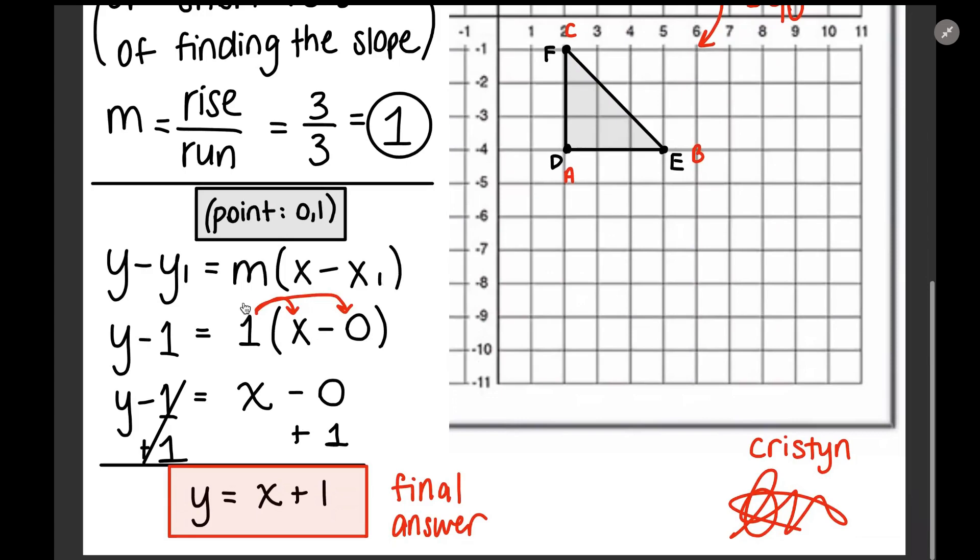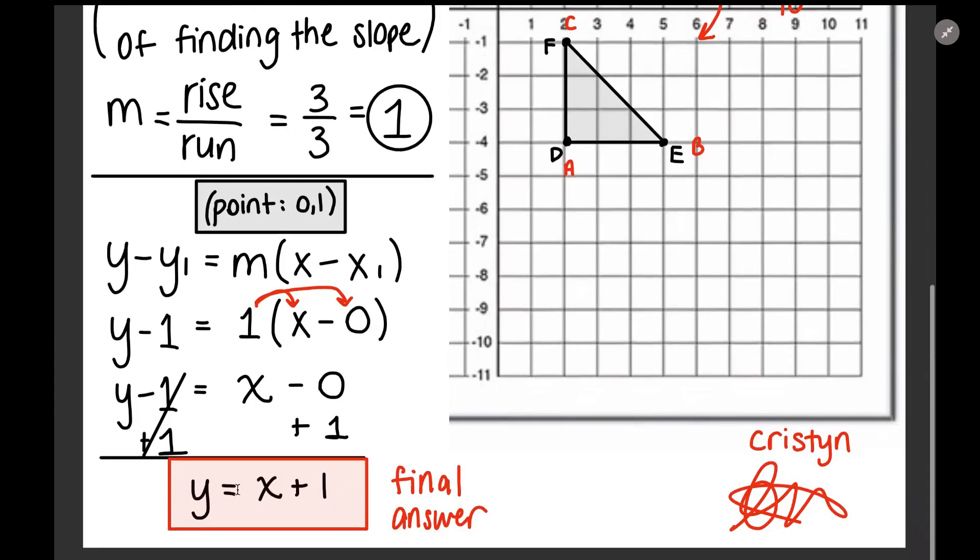So basically you plug in your slope of 1 and this is going to be x1, this is going to be y1. So plugged in 1 there, plugged in 0 there, distributed and I got this answer. You have to plus 1 to both sides and at the end I got y equals x plus 1. This is my final answer.